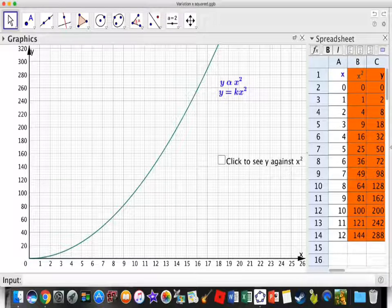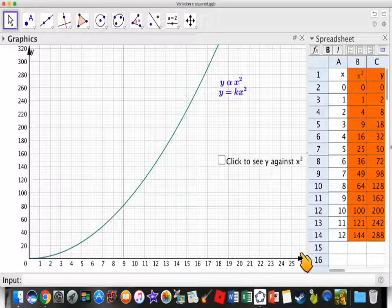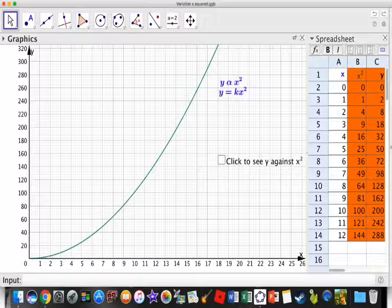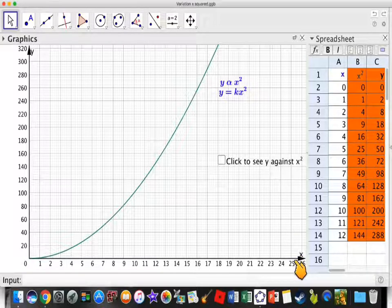But if I change this axis down here to X squared, and then plot X squared against Y, so plot the points 0, 0, 1, 2, 4, 8, 9, 18, 16, 32, 25, 50, I won't be able to get any more on the graph because the axis only goes up to 25.